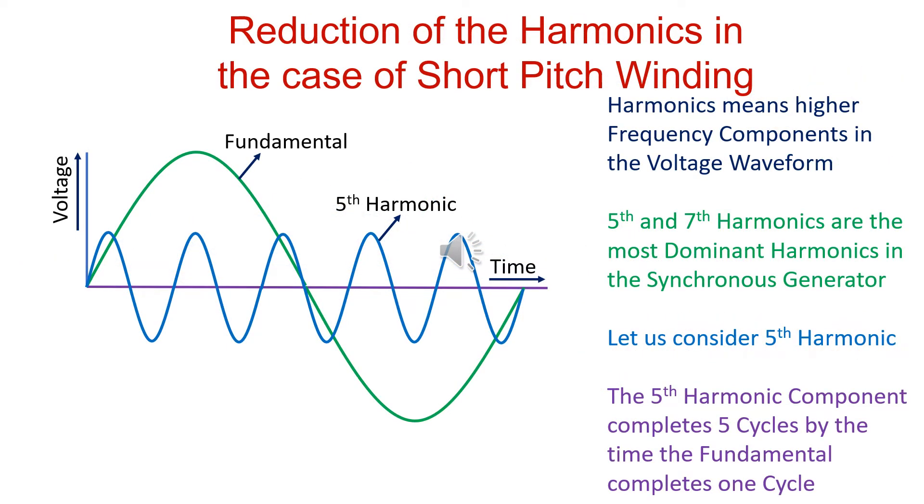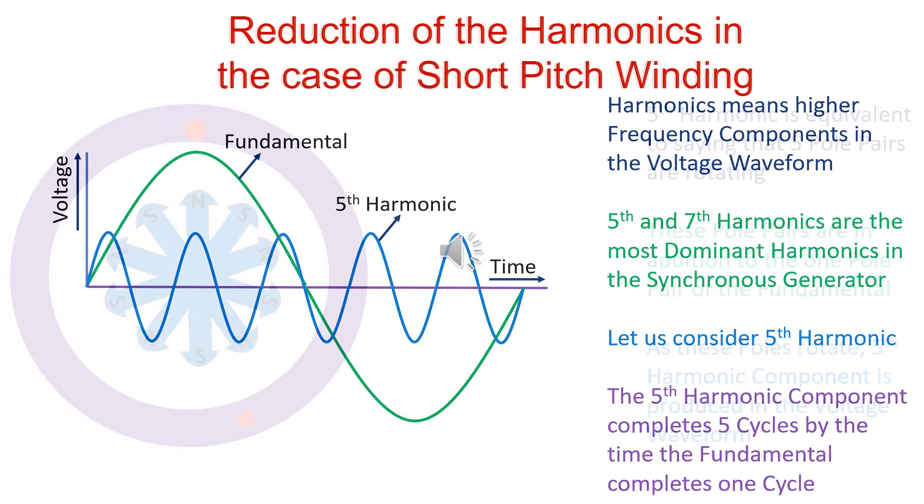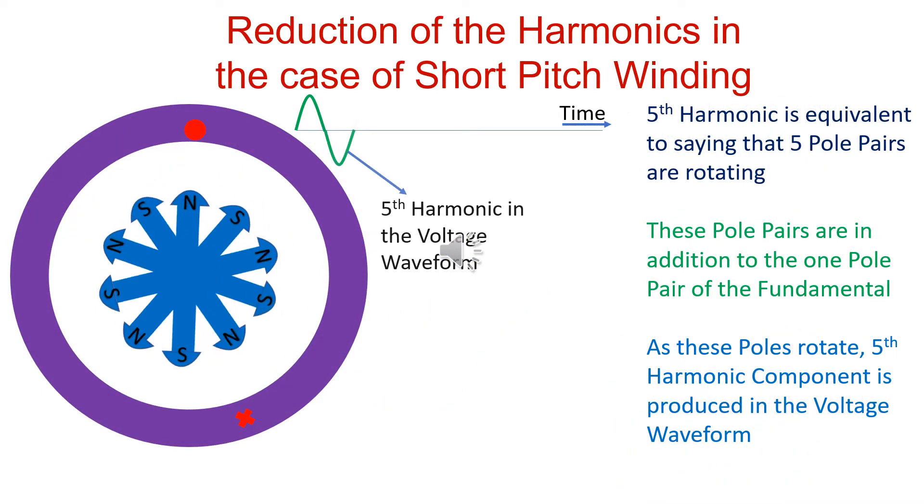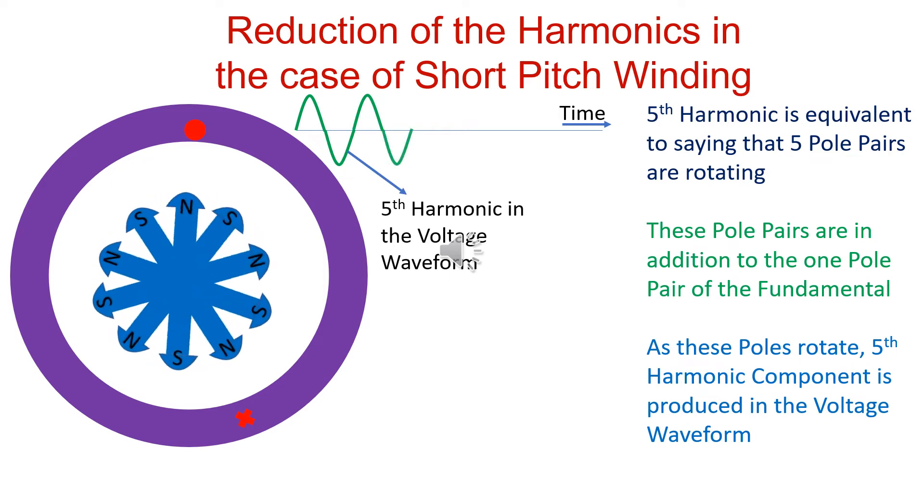The fifth harmonic completes 5 cycles by the time the fundamental completes 1 cycle. It is as good as saying that 5 pole pairs are created.